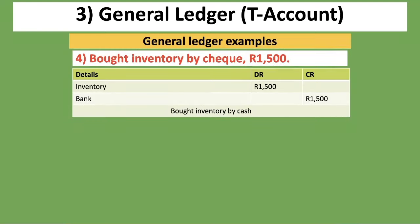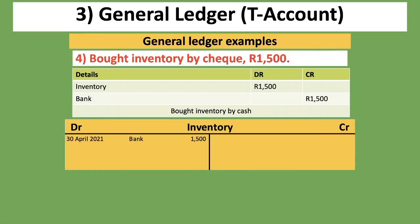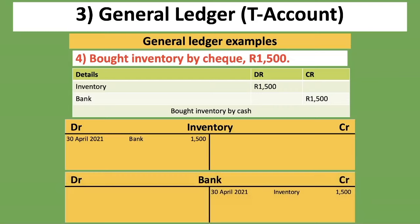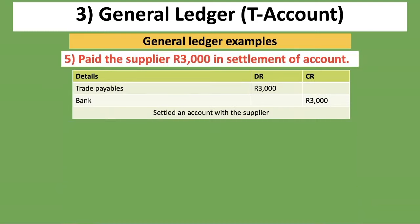The fourth transaction: bought inventory by check, 1,500 rand. Inventory is increasing — put on the debit side — and bank is decreasing because we're buying inventory by check. For the inventory T-account, detail is bank and amount is 1,500 rand. For the bank T-account, it's on the credit side with detail as inventory and amount 1,500 rand.